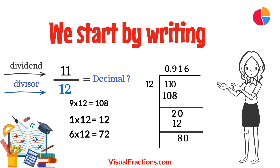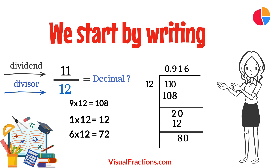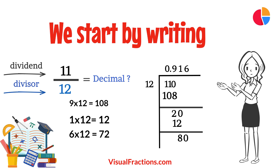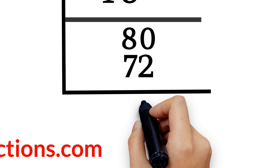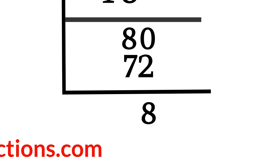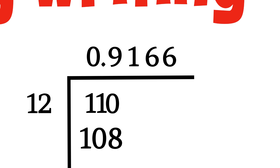The process continues with 12 fitting into the new remainder — subtracting 72 from 80 — 6 times repeatedly, leading to the repeating decimal 6. Therefore, the fraction 11 twelfths converted to a decimal is 0.9166, with the 6 repeating indefinitely.